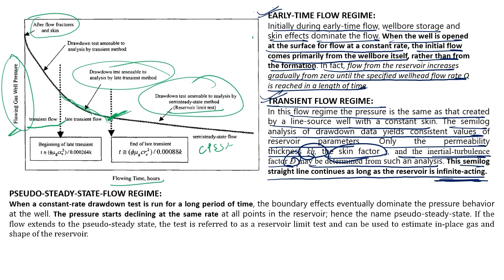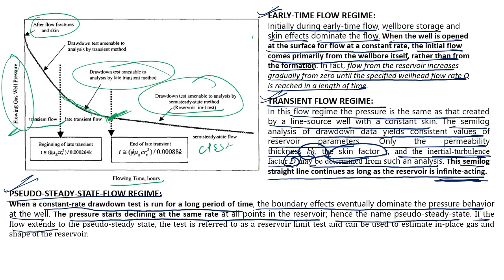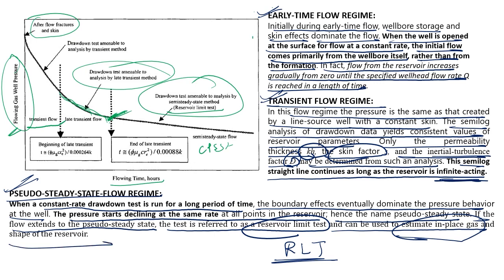When in transient flow regime the reservoir acts as if it is infinite in nature — it has no boundary. In pseudo steady state, when a constant-rate drawdown test runs for a long period, boundary effects dominate and pressure declines at the same rate at all points. If flow extends to pseudo steady state, the test is called a Reservoir Limit Test (RLT) and can estimate in-place gas or oil and reservoir shape.